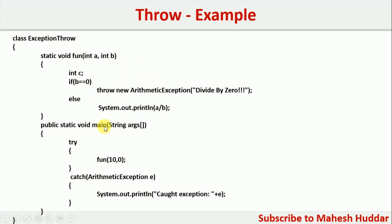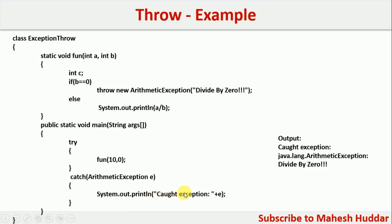In the main part of the method, as usual, wherever you have called that particular method you should have a try block, and for the exception you have thrown you should have an associated catch block. In this case, ArithmeticException was thrown, so we should have a catch block to handle this ArithmeticException. In the output, the catch block statement — 'caught exception' — will be printed first, because the second parameter is zero, b is zero, and we have thrown an exception. Then the system-defined message will be displayed, followed by your own custom message passed while throwing the exception explicitly.